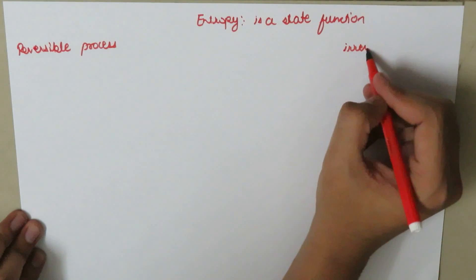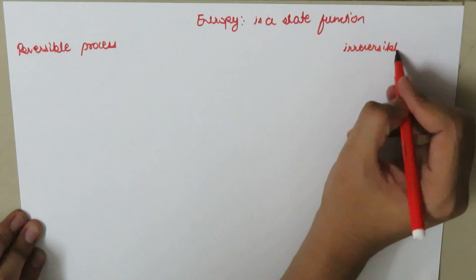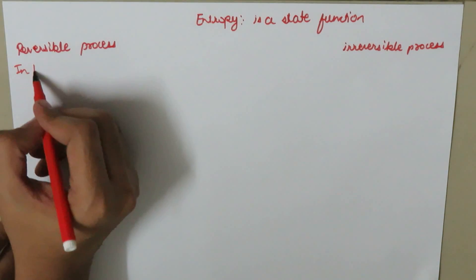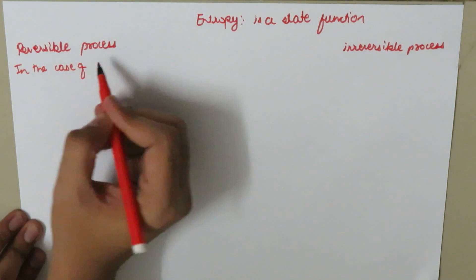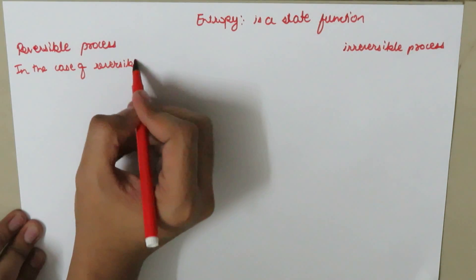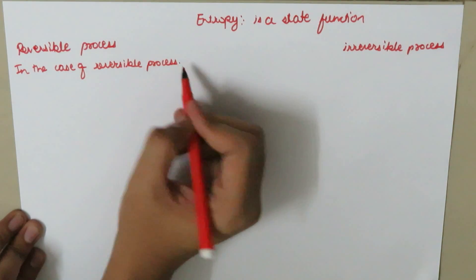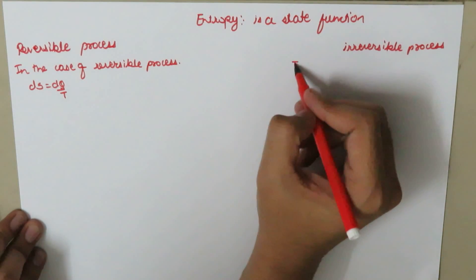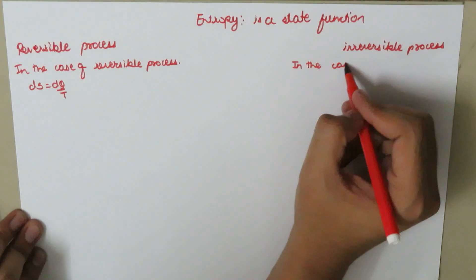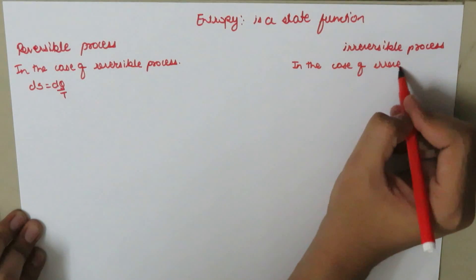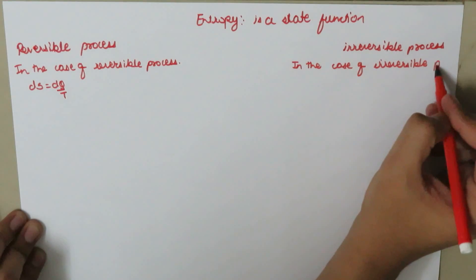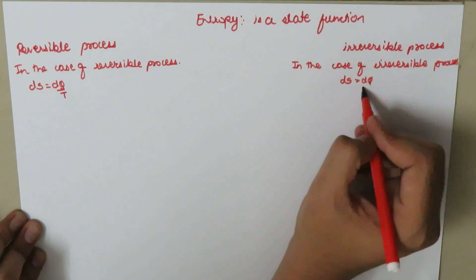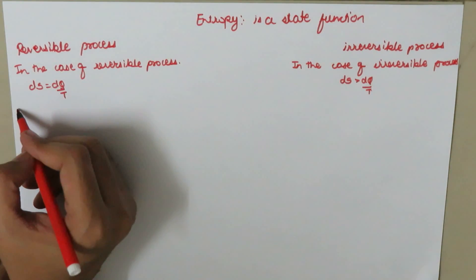In the case of the reversible process, the entropy can be defined as dS is equal to dQ over T. But in the case of the irreversible process, the entropy can be defined as dS should be greater than dQ over T.